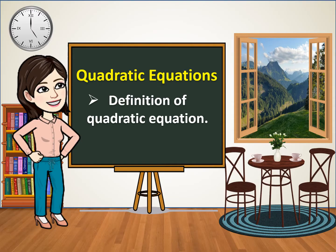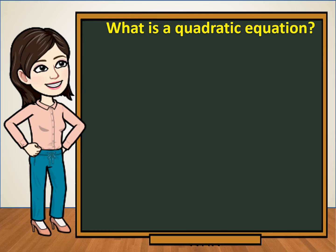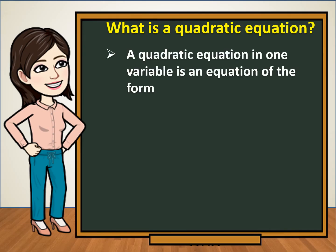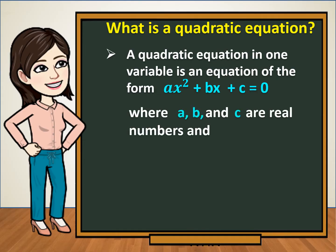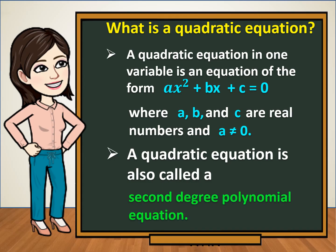First, let us define quadratic equation. What is a quadratic equation? A quadratic equation in one variable is an equation of the form ax squared plus bx plus c is equal to 0, where a, b, and c are real numbers, and a is not equal to 0. A quadratic equation is also called a second-degree polynomial equation.